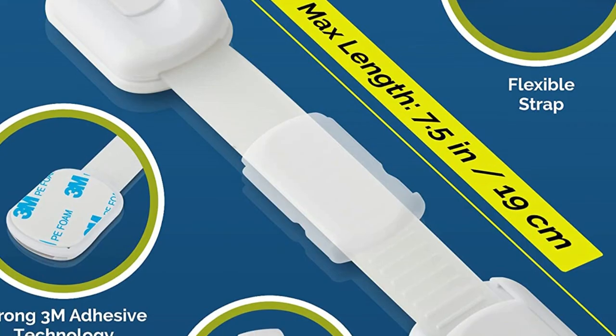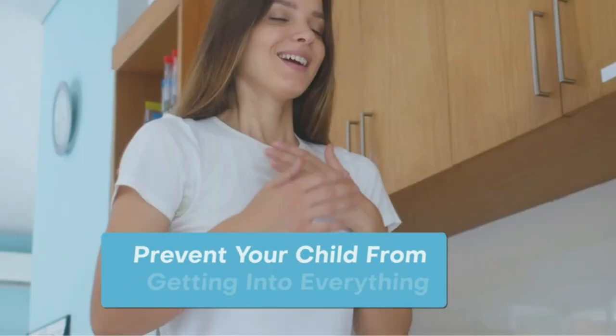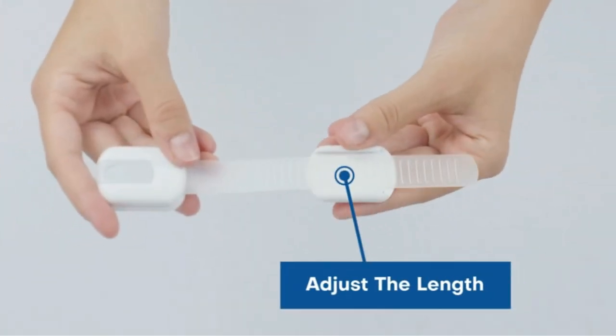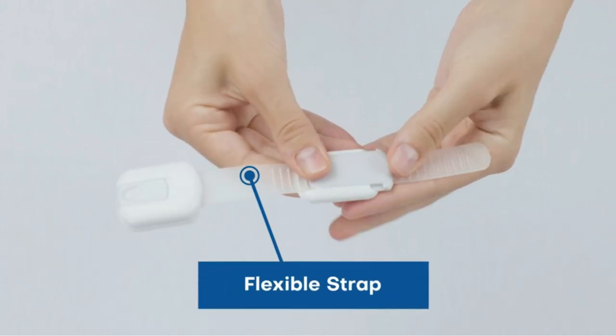These child-proof locks are attached with 3M adhesive to each door of your cabinet or the lid of your toilet, and have a strong strap that holds the cabinets shut. When you want to get in, simply press the release button, and the strap comes loose on one side.